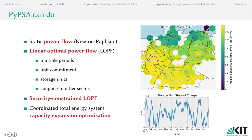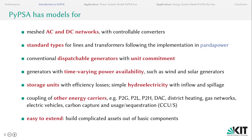The feature we use the most is the coordinated total energy system capacity expansion, of which LOPF is definitely a part. PyPSA has models for meshed AC and DC networks, including controllable converters, and draws on the standard line types and transformer types that are given in the implementation of PandaPower. We include both conventional dispatchable generators with unit commitment, as well as generators with time-varying power availability, such as wind and solar generators.